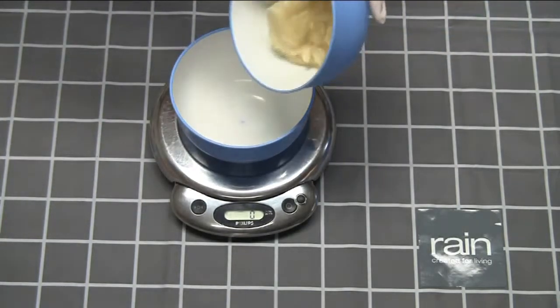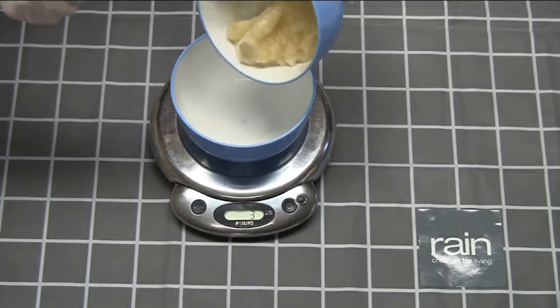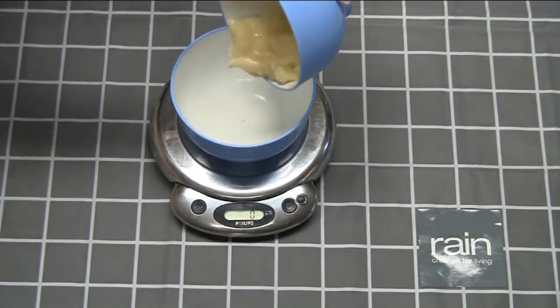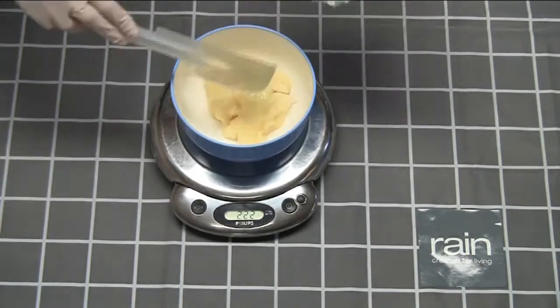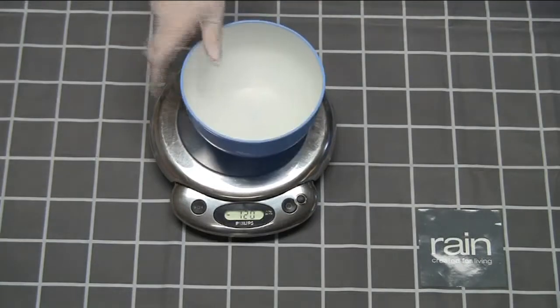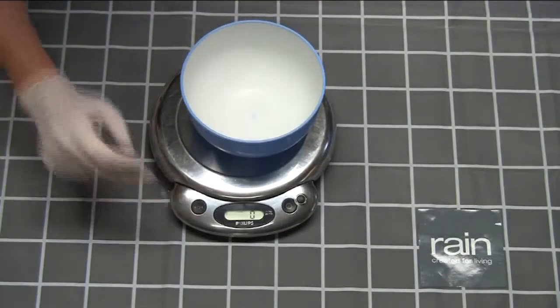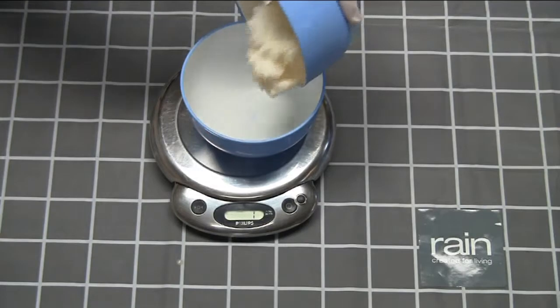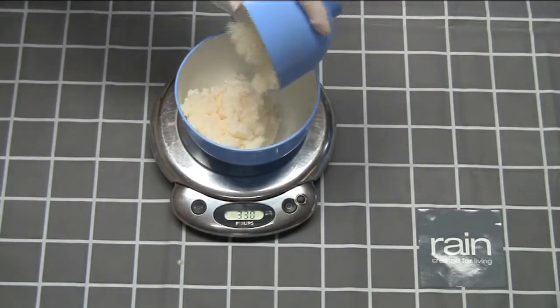Measure out all your fats and oils, always remembering to tare the scale in between so that you're not measuring the container's weight. Remember that soap making is a chemistry process, and accuracy can only come from accurate measuring.